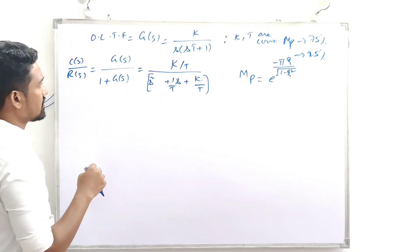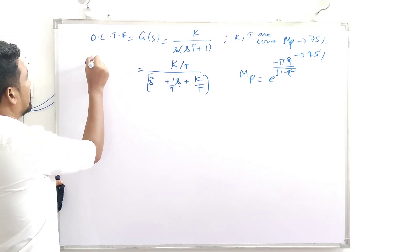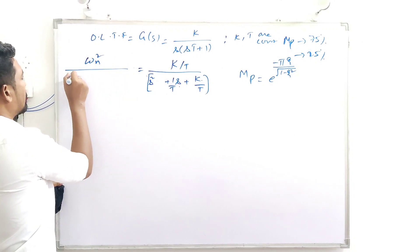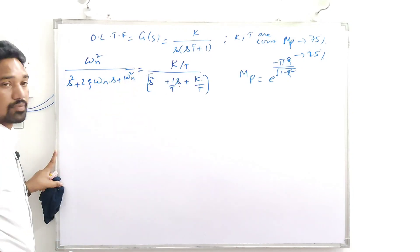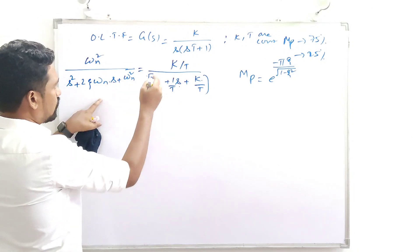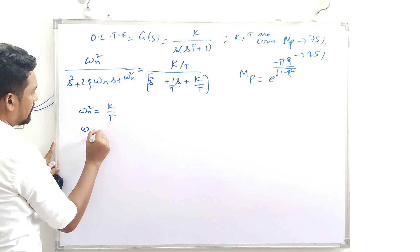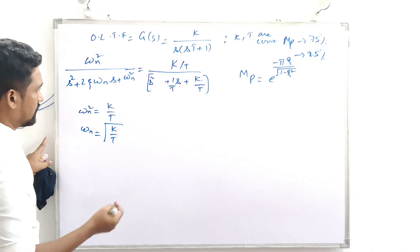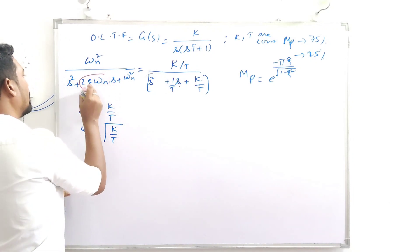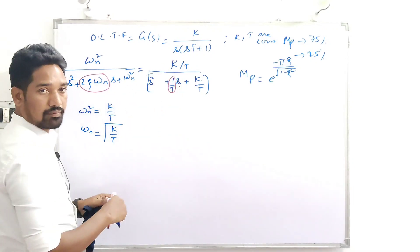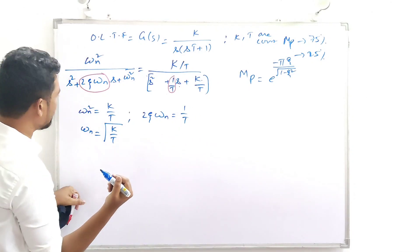This expression should be compared with the standard second-order transfer function: ωn² / (s² + 2ζωn·s + ωn²). Comparing denominators, ωn² = K/T, so ωn = √(K/T). Also, 2ζωn = 1/T.